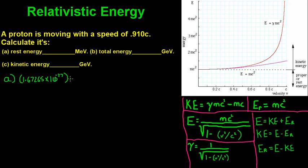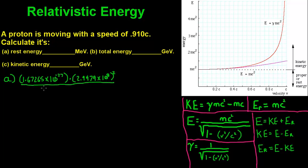Then we multiply that times c squared, which is 2.9979 times 10 to the 8th meters per second, squared. Now remember, we're going to need this in electron volts. So we're going to take this whole thing and divide it by 1.60 times 10 to the negative 19th, because that is the electric charge for an electron volt.